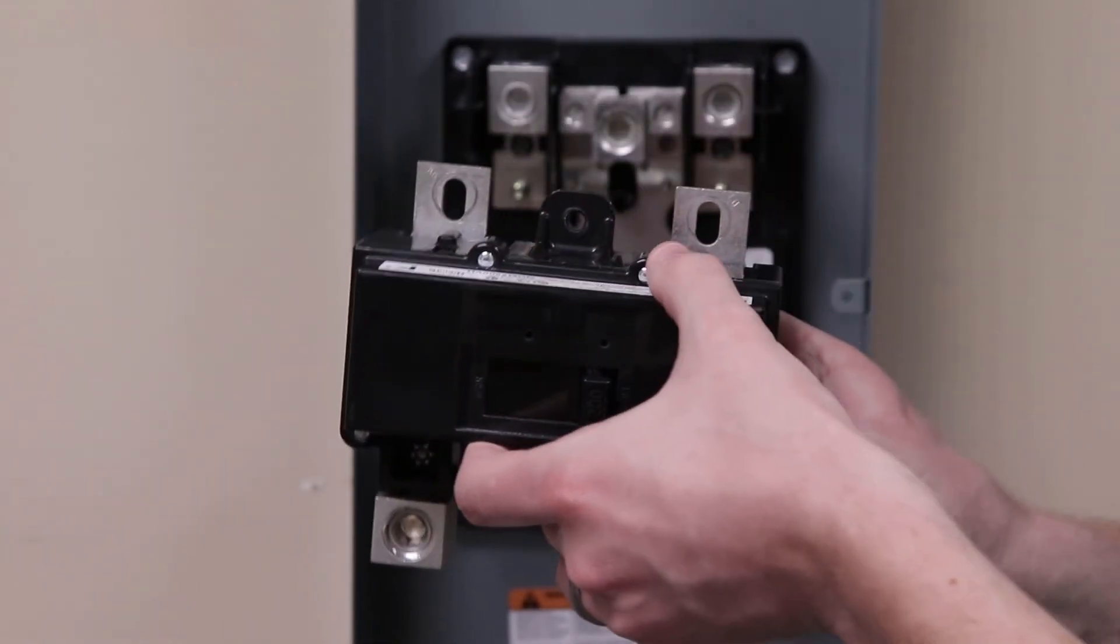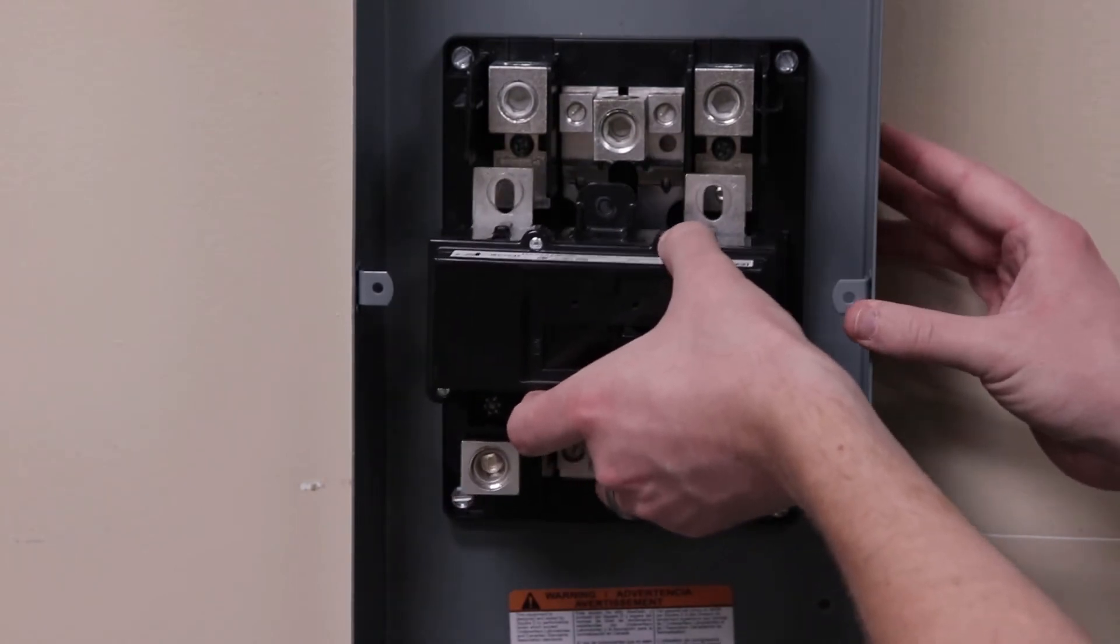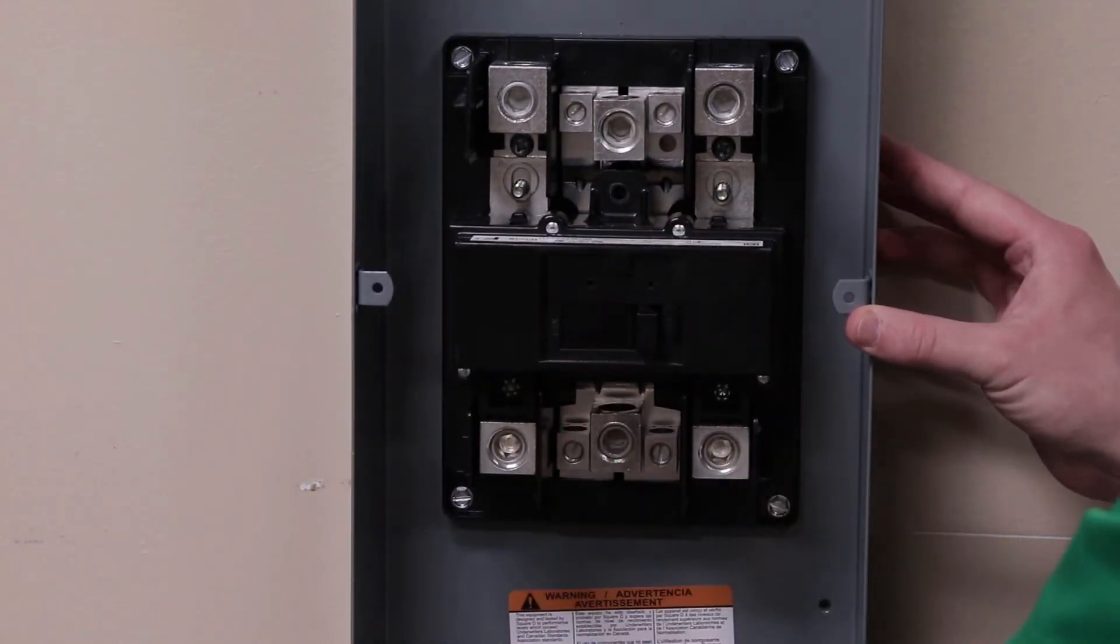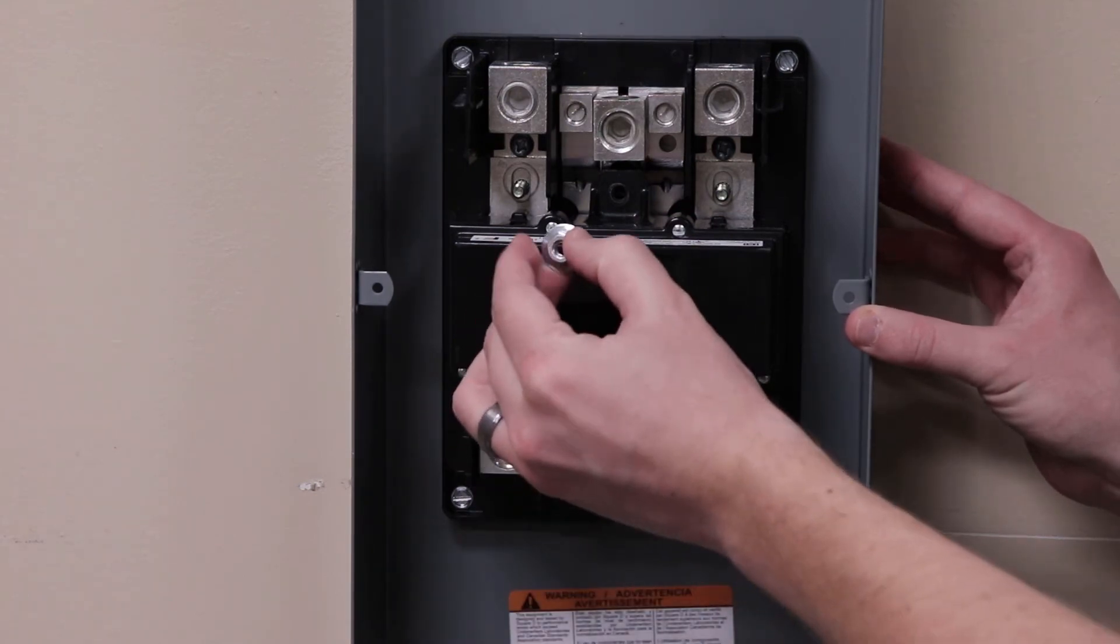So you'll slide the breaker on to the base and then use the provided keps nuts to tighten it to the base.